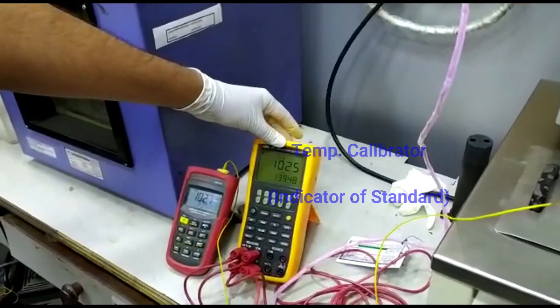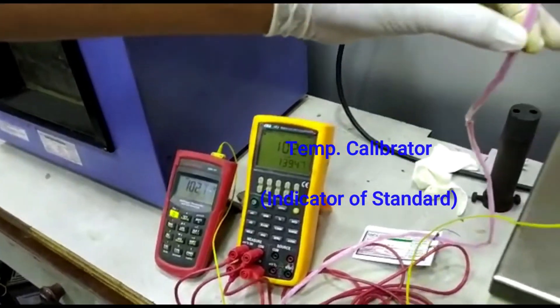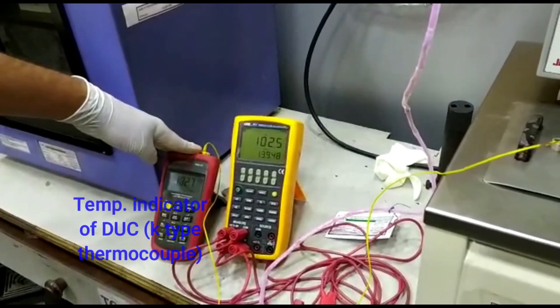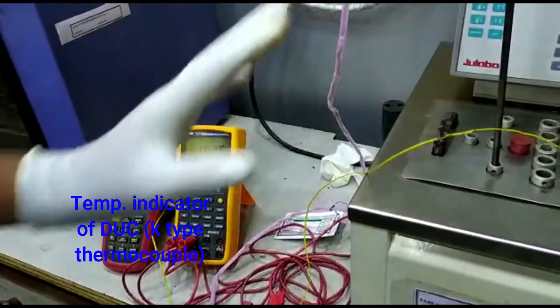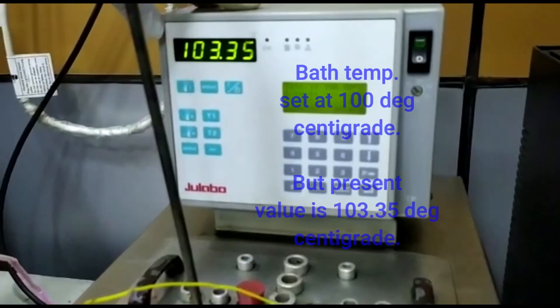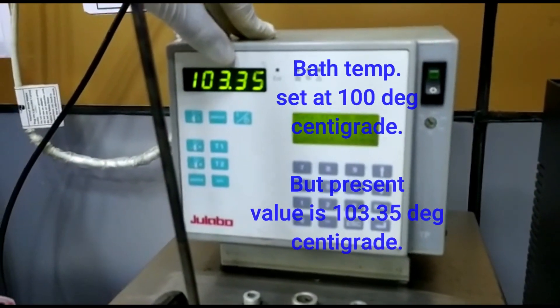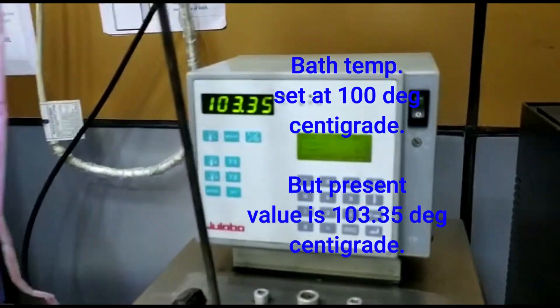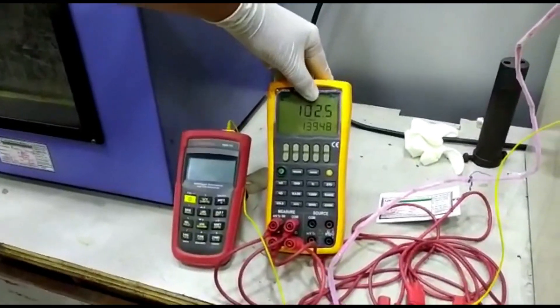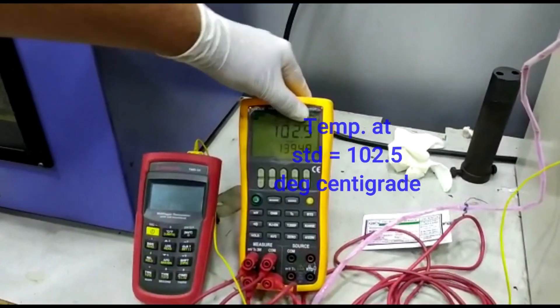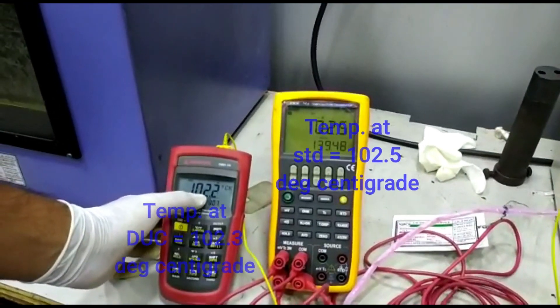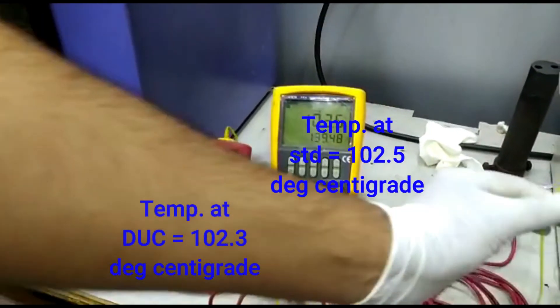This is our temperature calibrator by which we will get the reading of our SPRT and this is the digital thermometer to get the reading of this K type thermocouple. Now we set the temperature of this bath at 100 degree C and the bath is showing this temperature of 103 degree point 35 degree C. And now we can see the temperature showing this temperature calibrator is 102 point 5 degree C and this temperature meter is showing 102 point 3 degree C. This is the DUC.